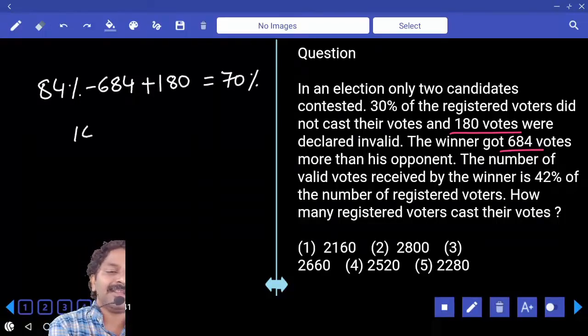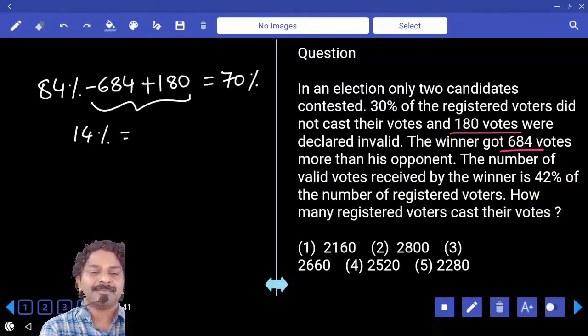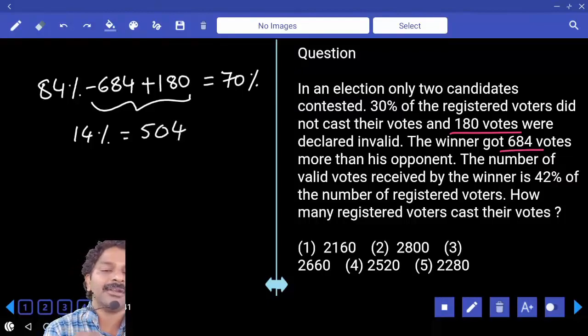70 comes to the other side. 14% is equal to these two values going to the right hand side and becomes 504.